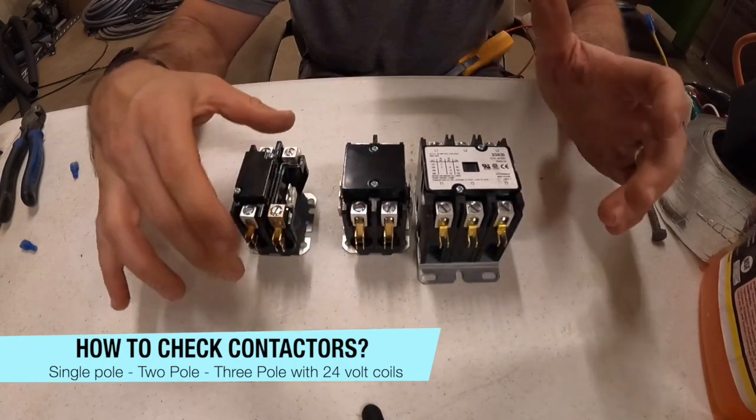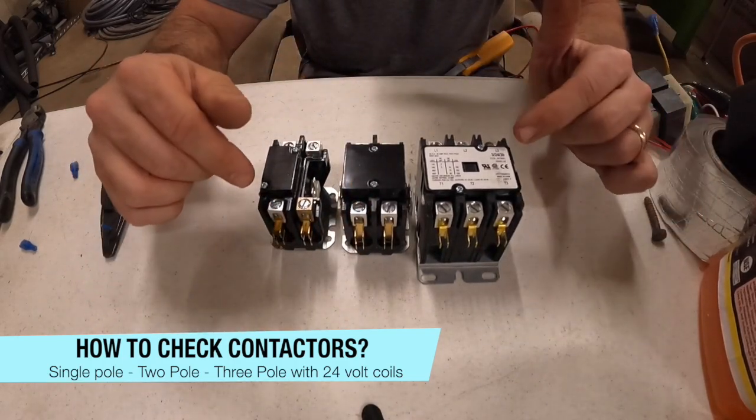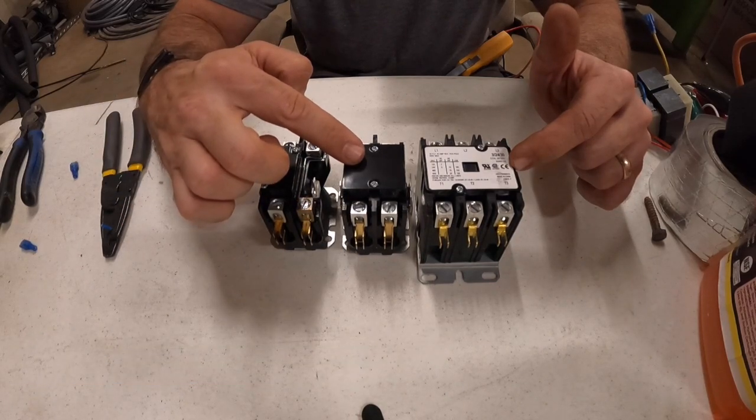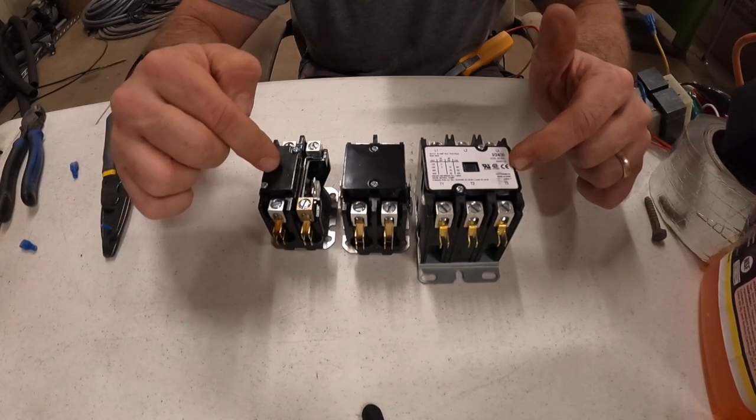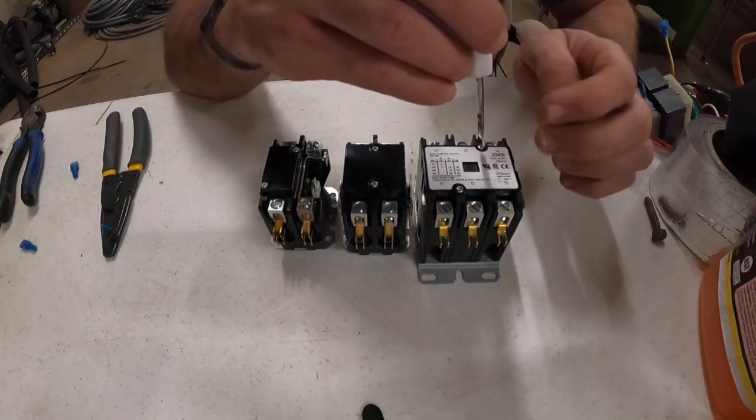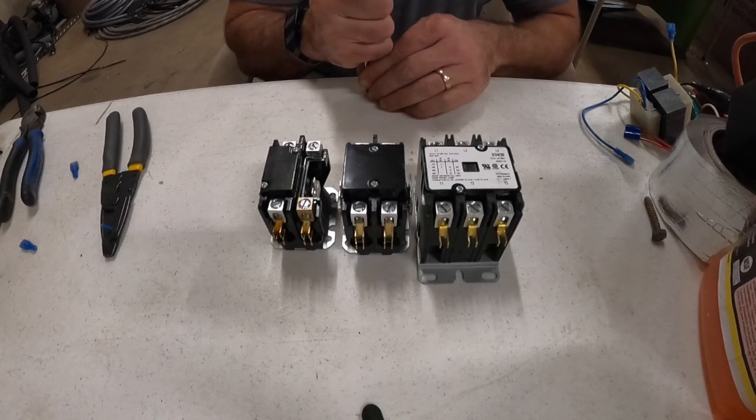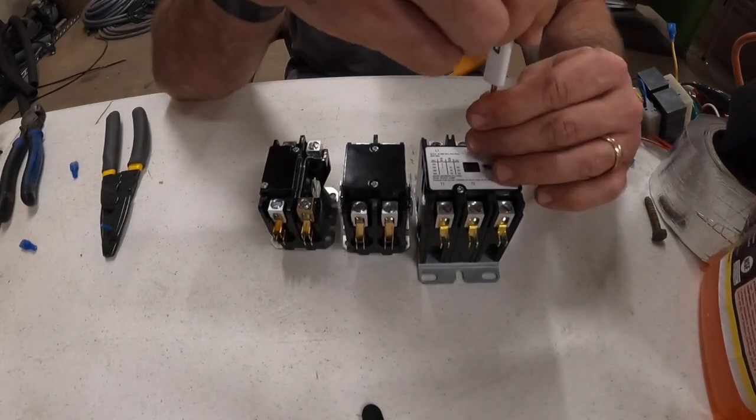Alright, how do you do diagnostics on contactors? Here we've got a three-pole contactor, a two-pole contactor, and a single-pole contactor. The difference in these is we've got three sets of points in this one. I will call it points; you can call it whatever you like.